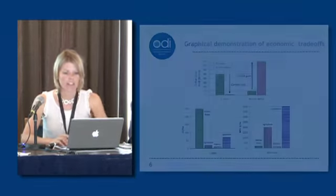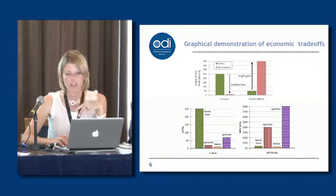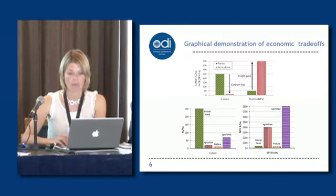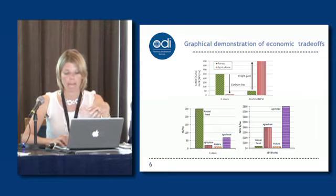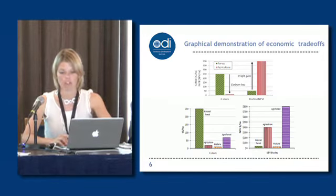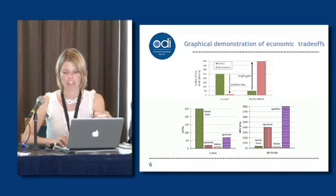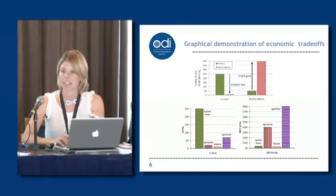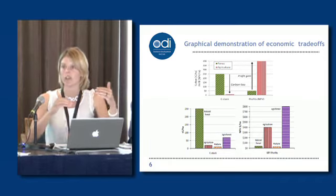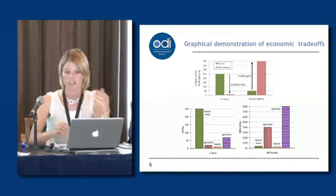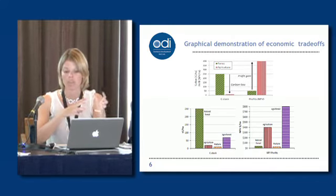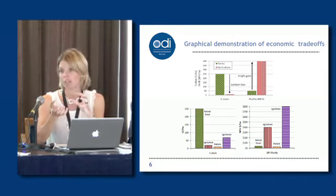This slide is trying to demonstrate some of the economic trade-offs that exist within REDD. You can see the carbon stock and then the profit on the right-hand side, and the next picture demonstrates how much that complexity increases when you're comparing a number of different land uses, both in terms of carbon as well as profits.